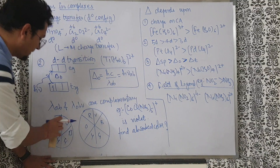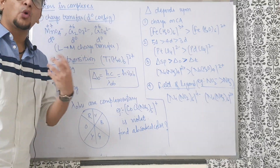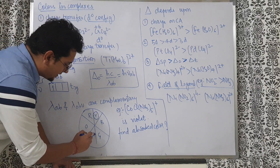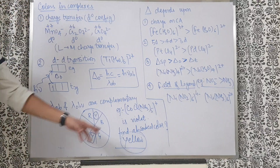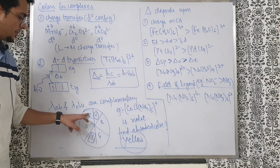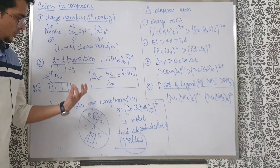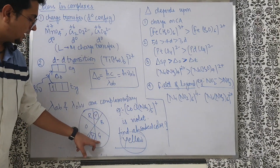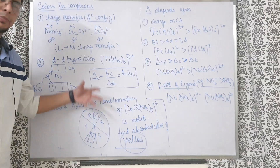For example, [Co(Cl)(NH3)5]⁺ is violet in color — the observed color is violet, so the complementary absorbed color would be yellow. If blue is observed, then orange-red is absorbed. If green is observed, then red-violet is absorbed. If red is observed, then violet-green is absorbed. This complementary coloration can be read off the VBGYOR wheel.